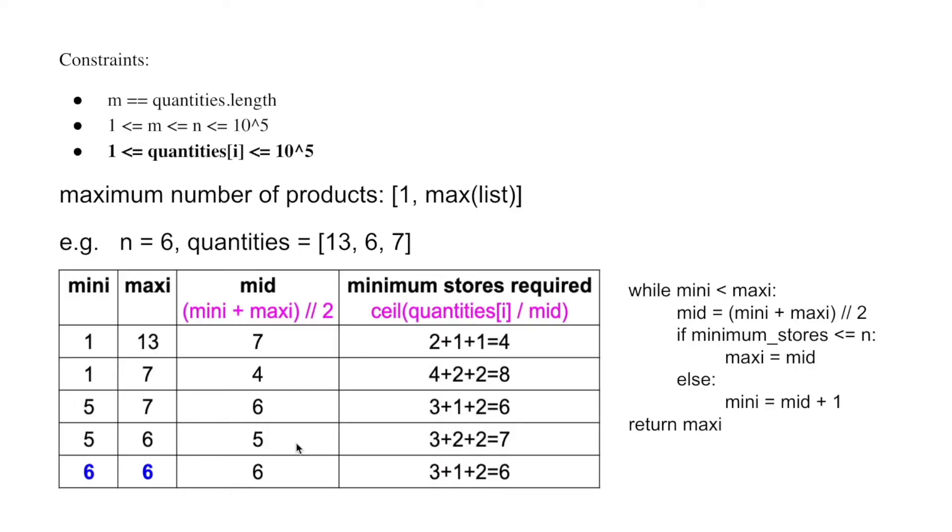Now the mid is 5. The minimum stores required is 7. 7 is bigger than the stores that was given. Change the lower limit to mid plus 1.